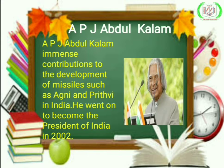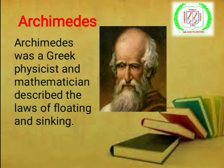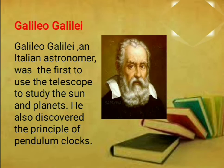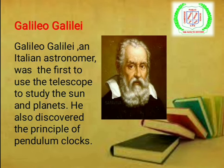Archimedes was a Greek physicist and mathematician who described the laws of floating and sinking. Galileo Galilei, an Italian astronomer, was the first to use the telescope to study the sun and planets. He also discovered the principle of pendulum clocks.